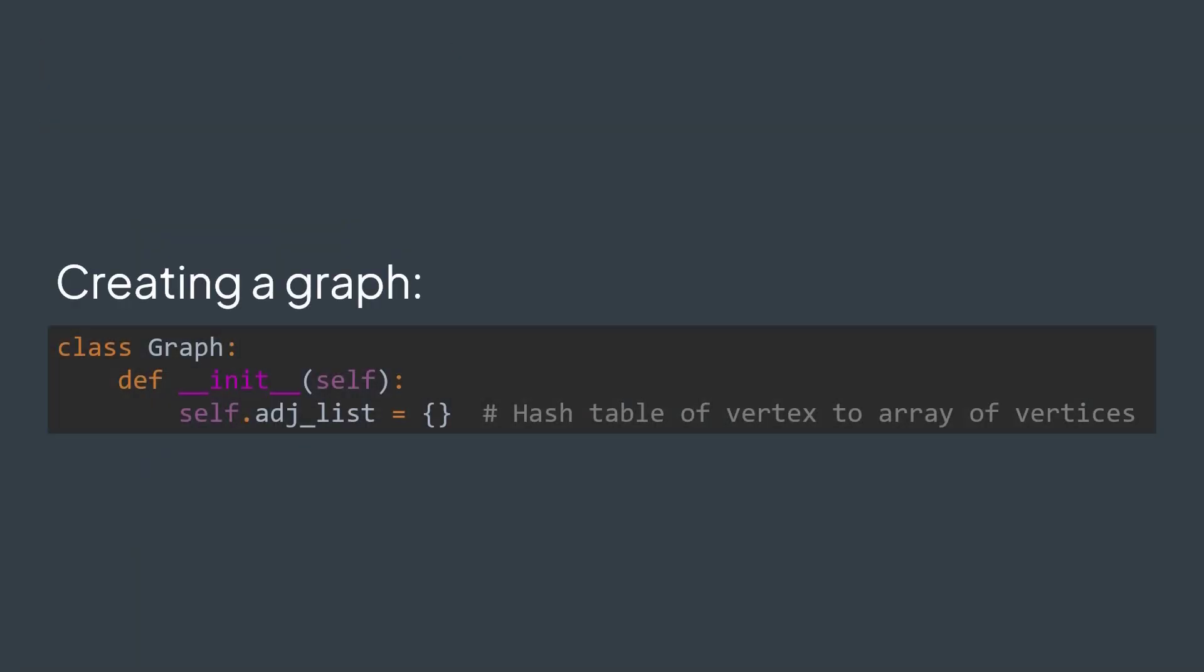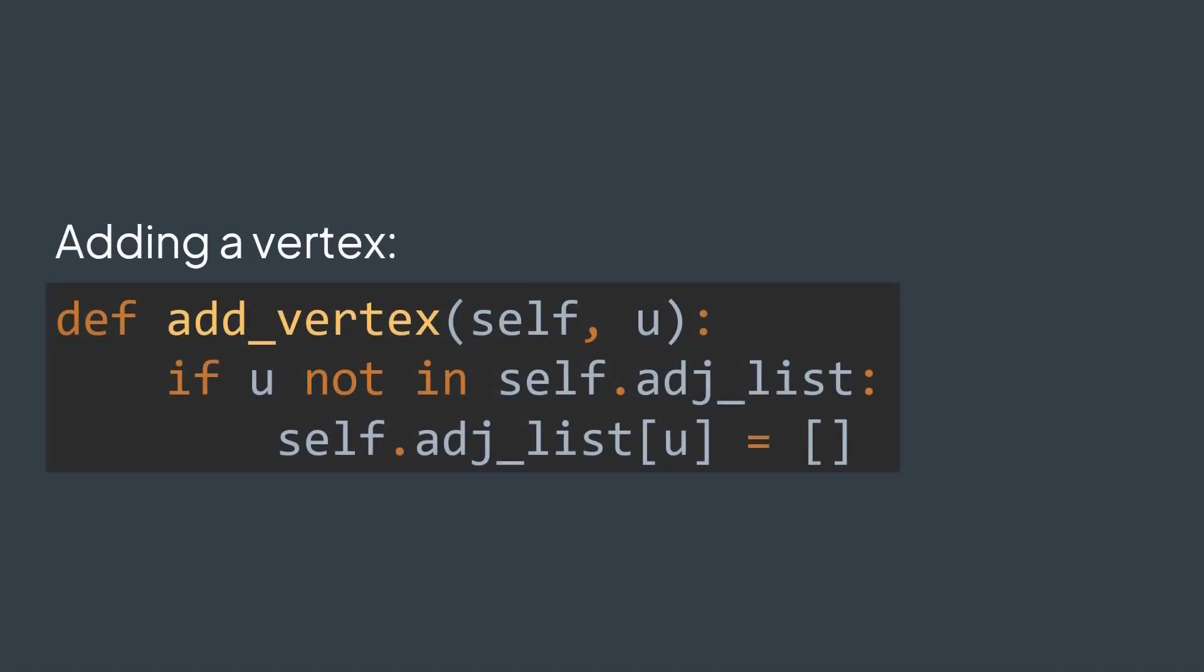In code, we can have a class Graph that has an attribute adj_list, the adjacency list, whose type is hash table of vertex to array. Now we need to implement operations. To add a vertex, we have a parameter u that represents the ID of the vertex we want to add. To add it, after checking it doesn't already exist in the graph, we just give it a new array in the hash table at the key u. This is why we assign an empty array to adj_list[u].